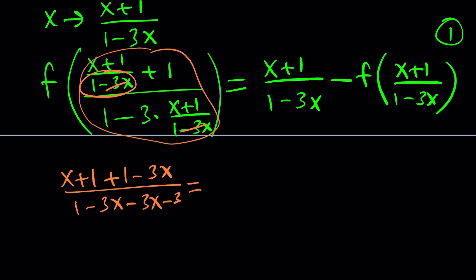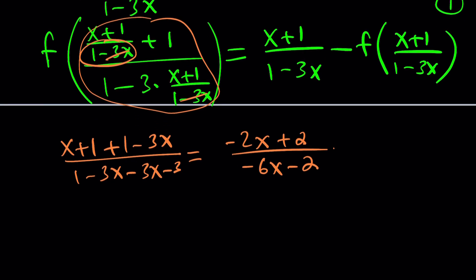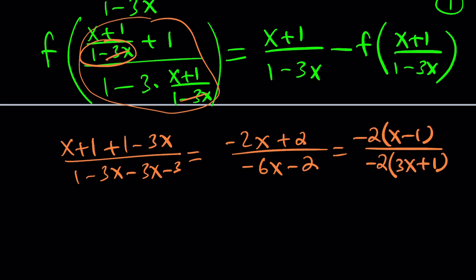This gives us negative 2x plus 2 divided by negative 6x minus 2. We can simplify by factoring out negative 2 from the numerator to get x minus 1, and factoring out negative 2 from the denominator to get 3x plus 1. We cancel the negative 2s.